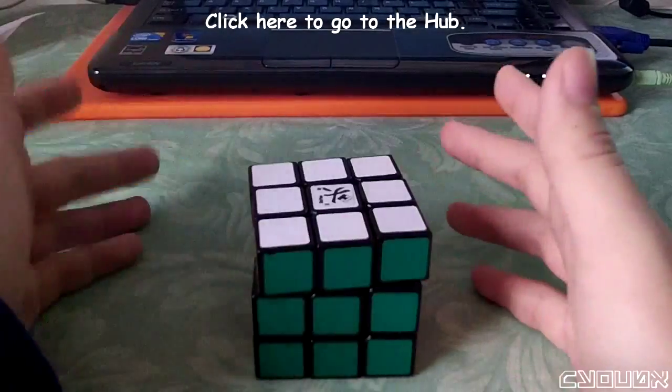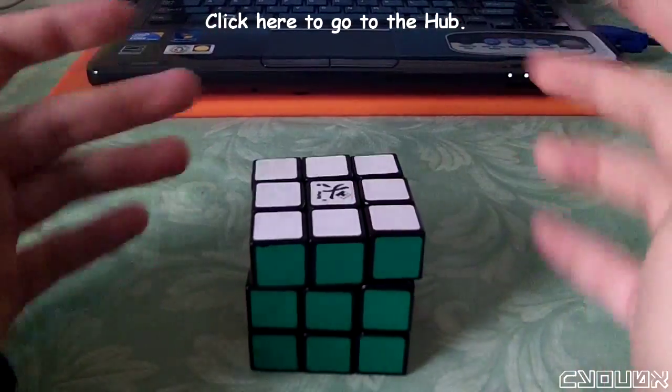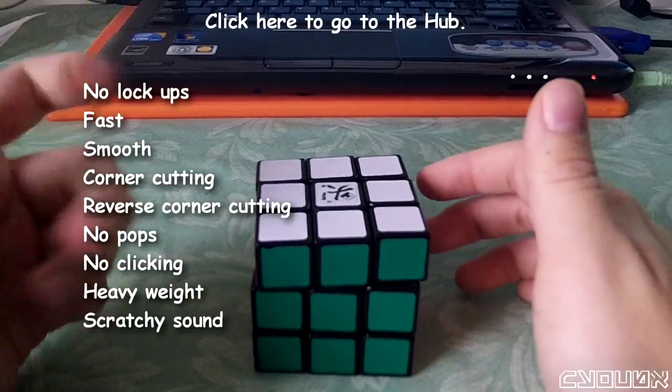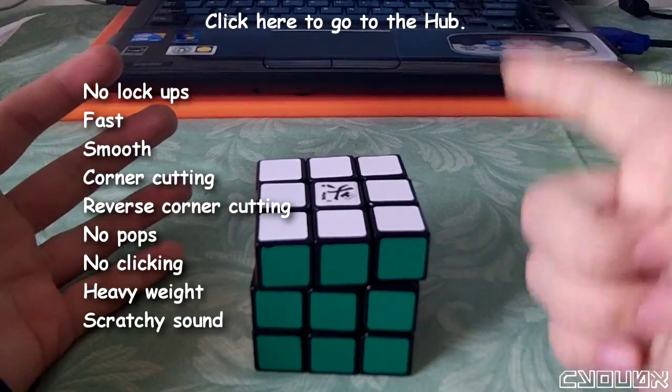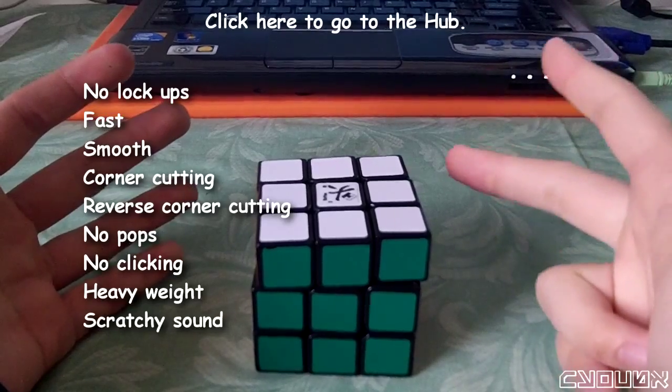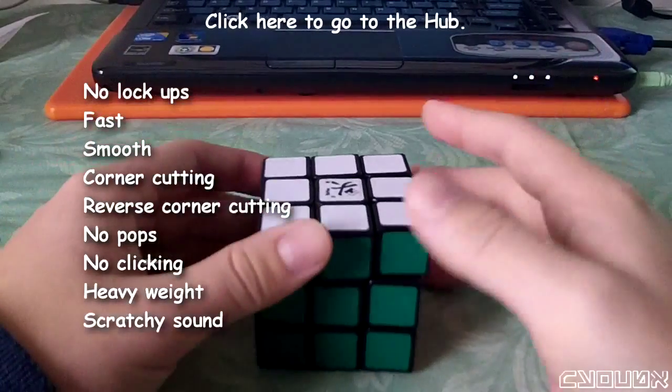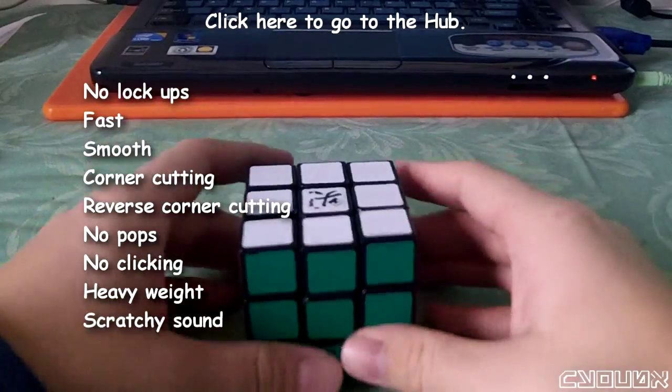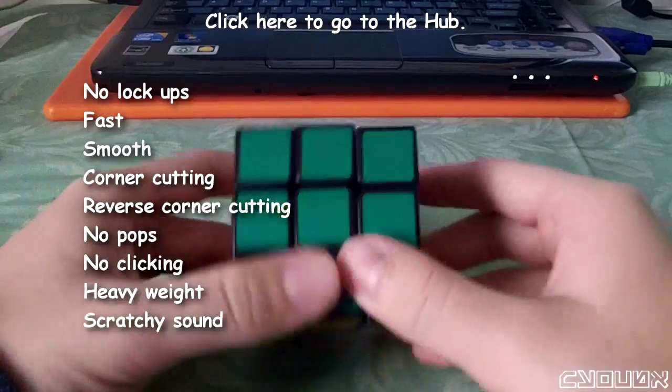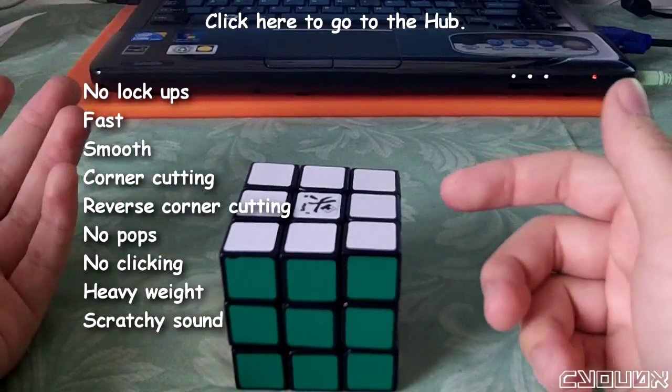Let's first refer back to our vision statement. I want a cube that has the following traits: no lockups, fast, smooth, corner cutting, reverse corner cutting, no pops, no clicking, a slightly heavier feel, and a slight scratchy sound. So looking at our template, the Guhong, the Guhong already has the first five traits that we're looking for. So really the only mods we're concerned about right now are the bottom four.